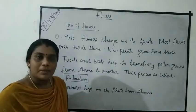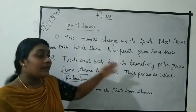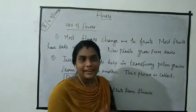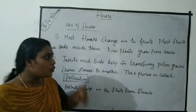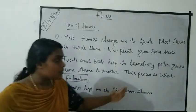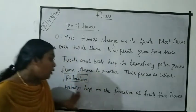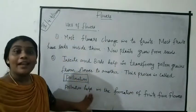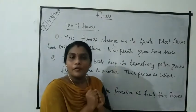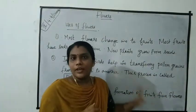Pollination means insects and birds help in transferring pollen grains from one flower to another. This process is called pollination, and pollination helps in the formation of fruits from flowers.